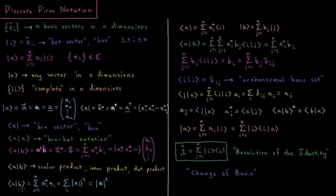If we take the bracket of a with itself, that is taking the dot product of its complex conjugate with itself, which equals a sum of the magnitude squared of all the individual elements. Since the magnitude squared of a complex number equals its complex conjugate times itself, this is overall equal to the squared magnitude of vector a.